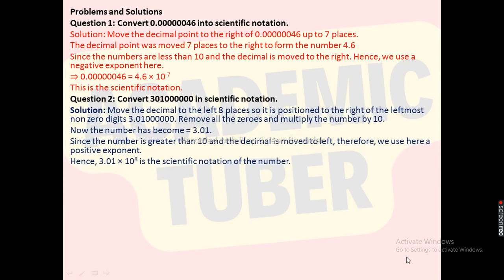Next question: Convert 301,000,000 into scientific notation. We have to move the decimal to the left 8 places so it is positioned to the right of the leftmost non-zero digit: 3.01000000. Remove all the trailing zeros and multiply the number by 10. The number becomes 3.01. Since the number is greater than 1 and the decimal is moved to the left, we use a positive exponent. Therefore, 3.01 × 10⁸ is the scientific notation.